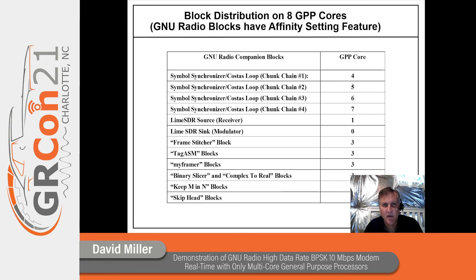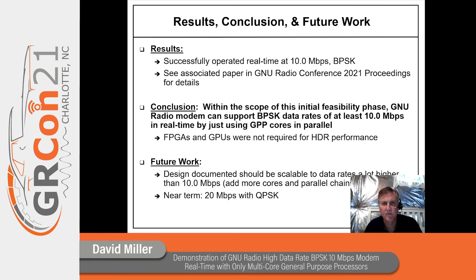This chart depicts how I distributed the blocks to the cores. GNU Radio actually has a built-in affinity setting feature that was very helpful for this project. Results and conclusions: I was able to operate GNU Radio at 10 megabits per second BPSK with the parallel cores approach.